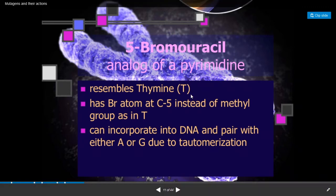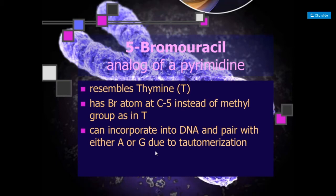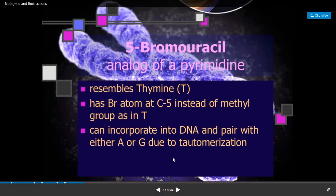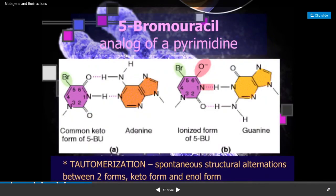5-Bromo-uracil is an analog of pyrimidine — it resembles thymine, which is a nitrogen base present in the DNA molecule. It has a bromine atom at carbon 5 instead of a methyl group as in thymine. This 5-bromo-uracil can incorporate into DNA and pair with either adenine or guanine due to tautomerization. It undergoes spontaneous structural alterations between two forms: the keto form and the enol form.